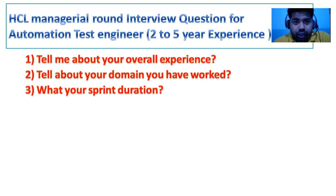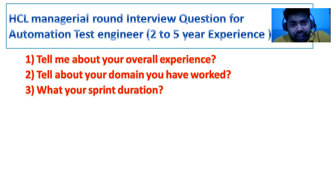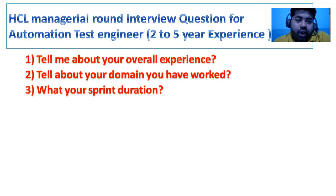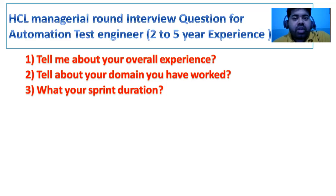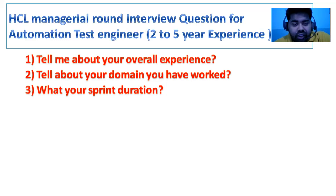Another question is: what is your sprint duration? They are going to check your real-time experience. You should know what agile is — I have already made a video on that. Sprint duration means we have multiple cycles: a two-week cycle or a three-week cycle. Some companies follow three-week cycles, others two-week. You can say two weeks — that is a good answer.